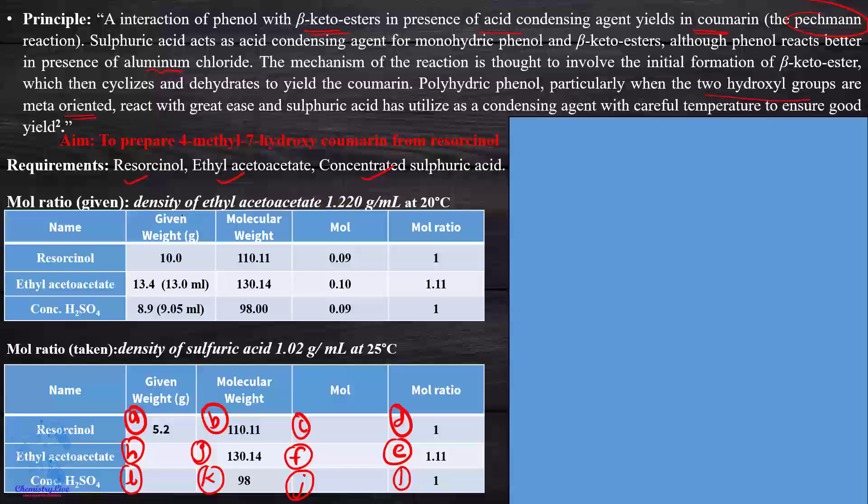Now we'll switch to our main part of the slide, the mole ratio. The given mole ratio is 1:1.11:1 for resorcinol, ethyl acetoacetate, and concentrated sulfuric acid. On the basis of that, if we take 5.2 gram resorcinol, we calculate moles of resorcinol equals weight divided by molecular weight. So 5.2 divided by 110.11, we get 0.047 mole.